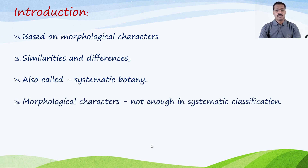According to modern trends of taxonomy, it was accepted that morphological characters are not sufficient enough to classify plants or to make a categorization. And that is why, other than morphological characters, other disciplines, other characters, and other parameters should be taken into consideration.